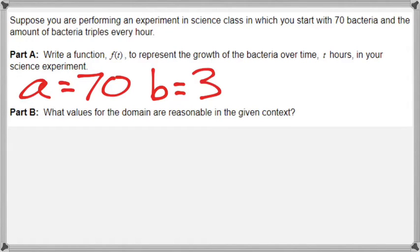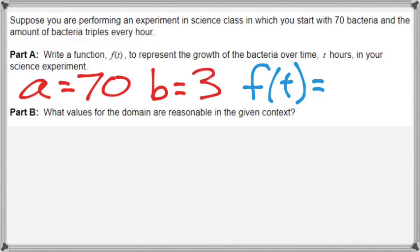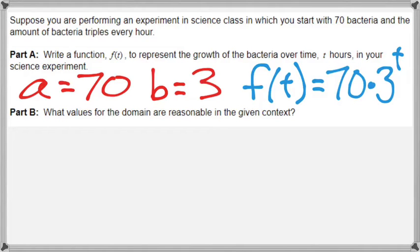b will be equal to 3 because it says the amount of bacteria triples every hour. So if something is tripling, it is being multiplied by a factor of 3. Putting this all together, the function is called f of t. a is the first value written down — that was 70 — and the common ratio was 3, so 3 is raised to the power of t. Our exponential function is f of t equals 70 times 3 to the power of t.